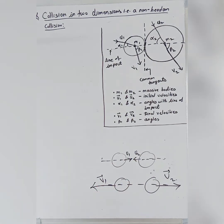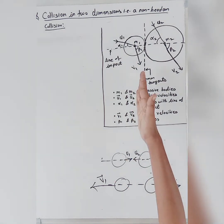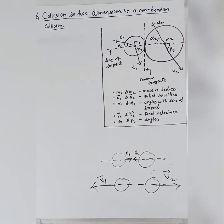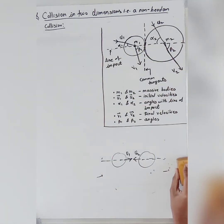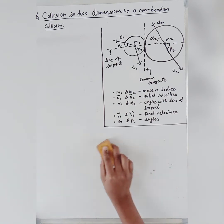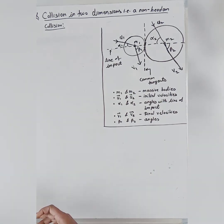The common tangent at the point of impact along which there is no force — always remember, in case of non-head-on collision, along this common tangent at the point of impact there will be no force.